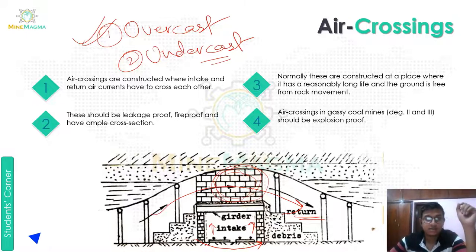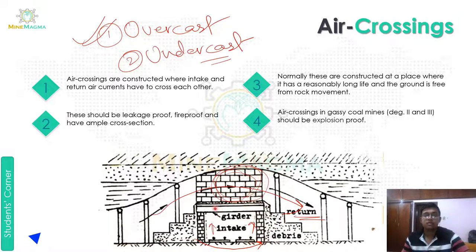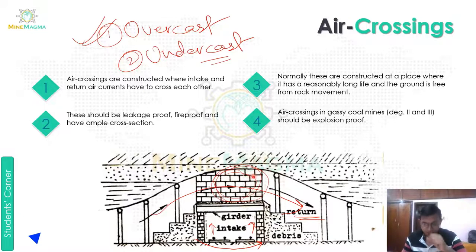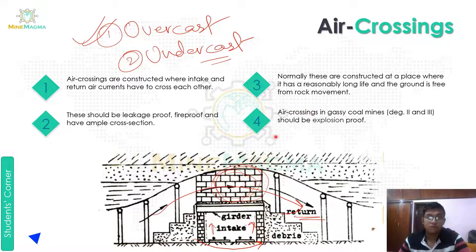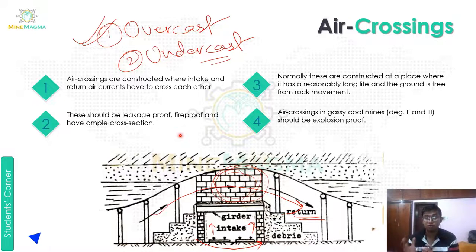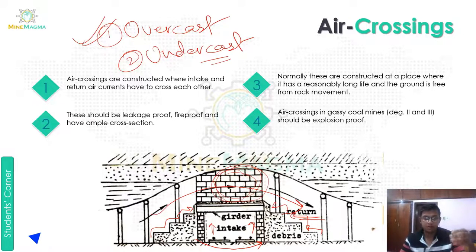Key points about air crossings: First, air crossings are constructed where intake and return airways have to cross each other. Second, they should be leakage-proof, fire-proof, and have ample cross-section. Third, they are normally constructed at a place where there is a reasonably long life expectancy and the ground is free from rock movement. Fourth, the air crossing is constructed using degree-2 and degree-3 materials to ensure structural integrity.